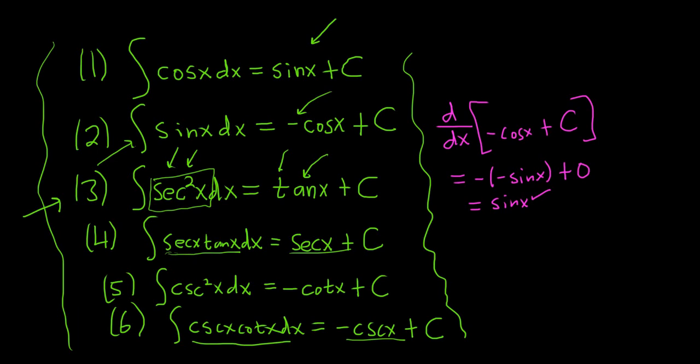Also, secant squared and cosecant squared give you the tangent functions — tangent and negative cotangent. So there are some patterns you can notice. If you're wondering about other trig functions, like the integral of secant or the integral of cosecant, we study those later in calculus one — those require a little bit more work. I hope this video has been helpful.